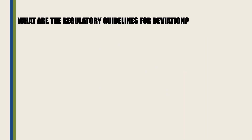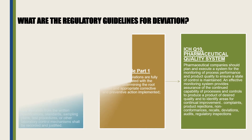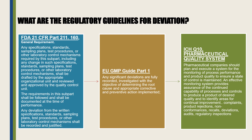Now we will discuss the regulatory guidelines for deviation. First is FDA 21 CFR Part 211.160, which states that if any specification or procedure is going to be revised, it should be drafted by the appropriate organizational unit and reviewed and approved by the quality control unit. Any deviation from the written specification or procedure should have a control mechanism, and it should be recorded and justified.